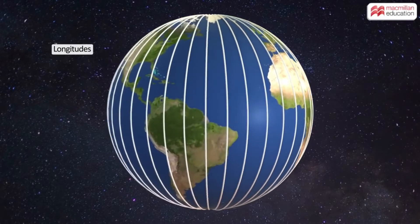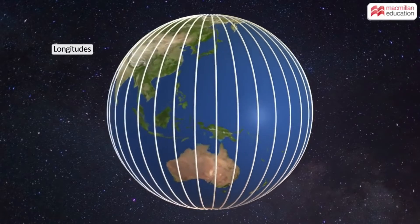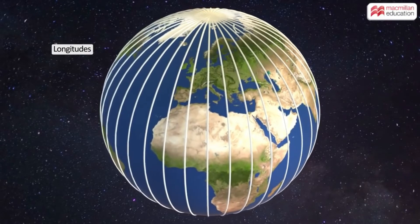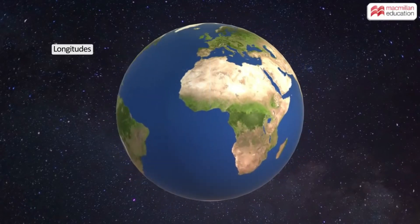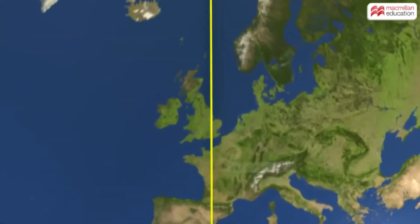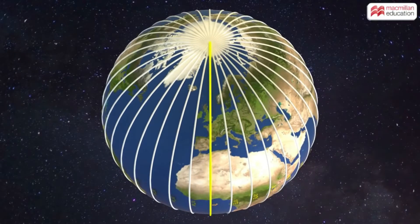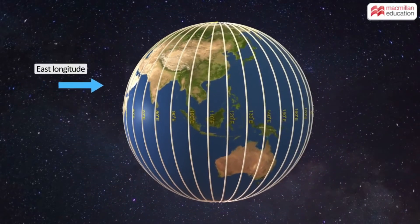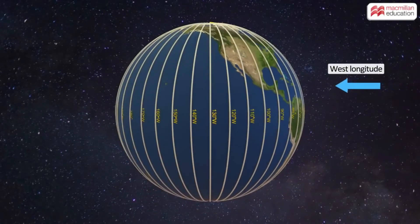The earth is round, so the length of the latitudes decreases as we move towards the poles. Longitudes or meridians are the imaginary lines drawn between the two poles. They divide the earth into 360 equal segments, like that of an orange. The 0 degree longitude passing through Greenwich in England is called the prime meridian. One half of the world is measured in 180 degrees of east, while the other half in 180 degrees of west.